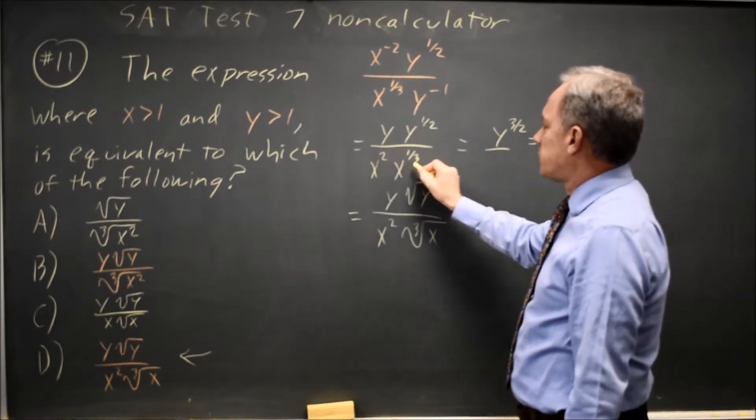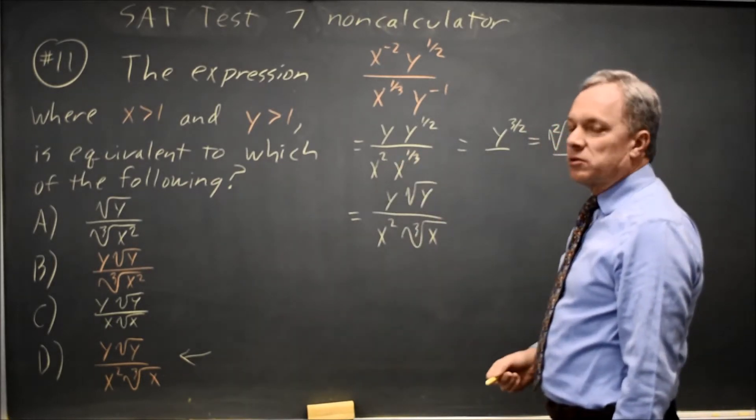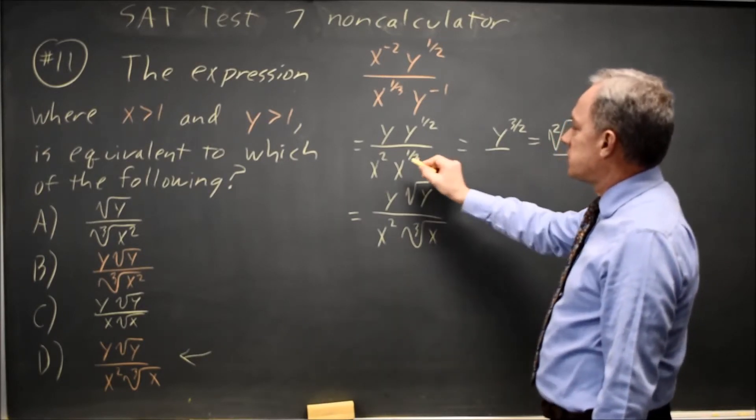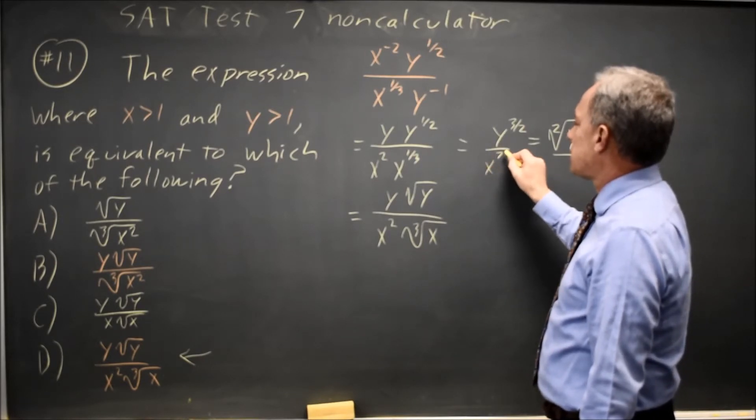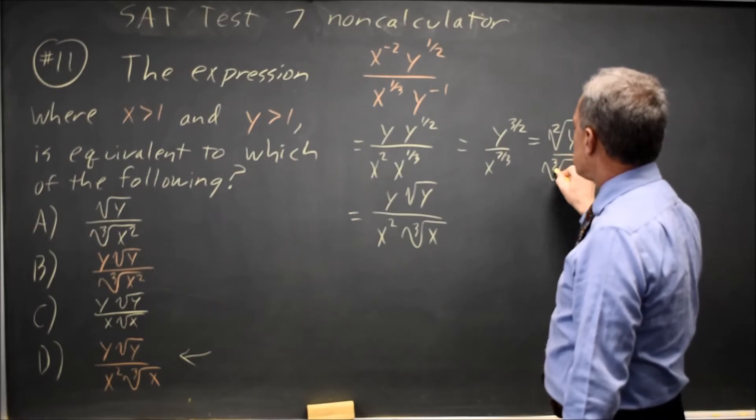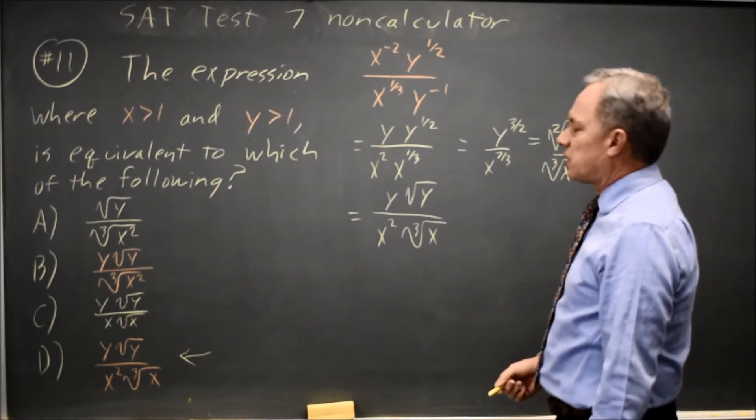If I combine the x squared with x to the 1 third, powers of the same base you add exponents, so that would be x to the 2 plus 1 third, which is 6 thirds plus 1 third is x to the 7 thirds. And as a radical, that would be the cube root of x to the 7, which is also not one of our choices.